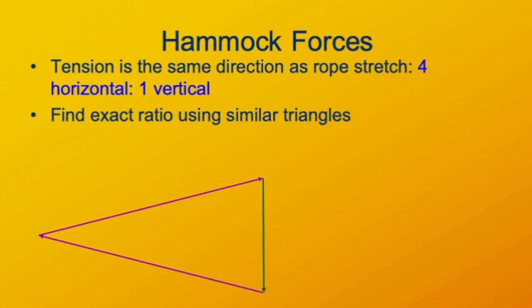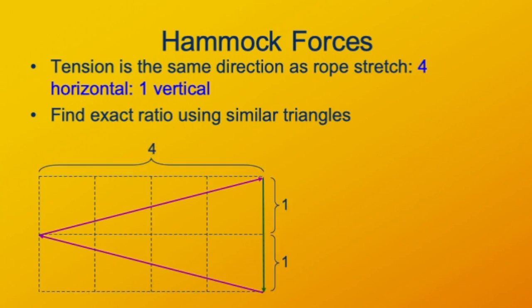Here we can specify the triangles in terms of the linear dimensions. Four meters horizontally and one meter vertically for each of these triangles. This adds up to two meters on the side.